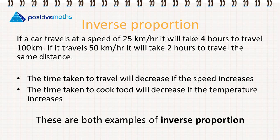Now we're going to talk about inverse proportion. If a car travels at a speed of 25 kilometers per hour it will take 4 hours to travel 100 kilometers. If it travels 50 kilometers per hour it will take 2 hours to travel the same distance. So 25 kilometers per hour is 4 hours and 50 kilometers per hour is 2 hours. This is when we're traveling the same distance.